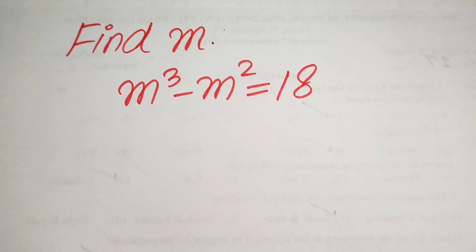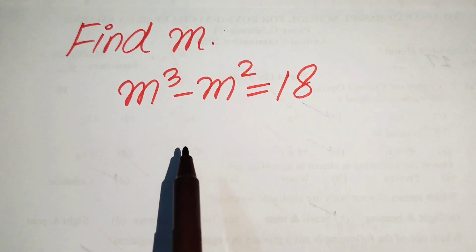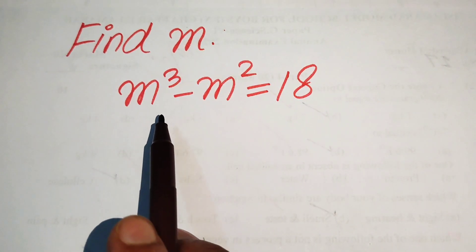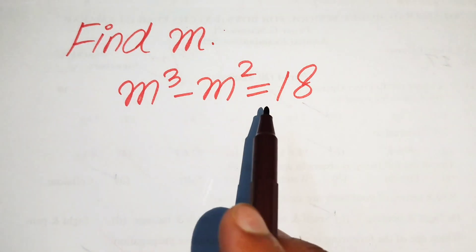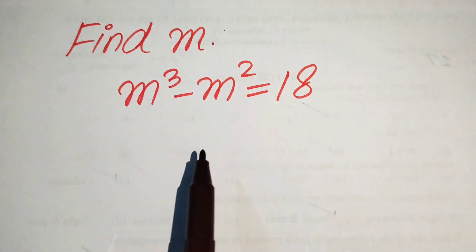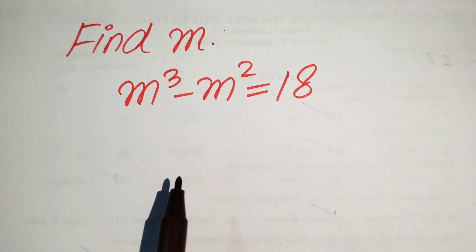Hello everyone, welcome. We are going to solve this nice algebra problem. Here we have m cubed minus m squared equals 18, and we solve this problem for the values of m.